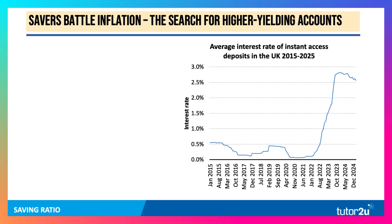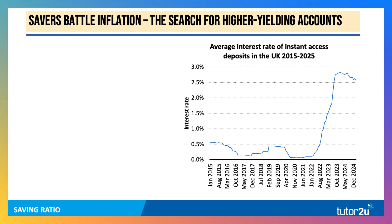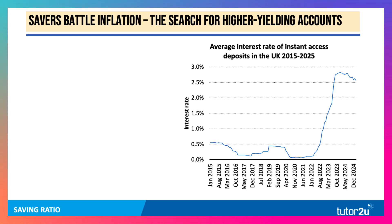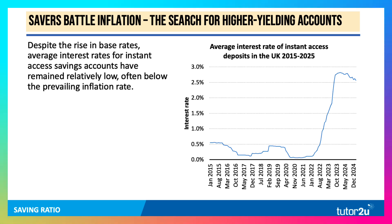Here's an interesting chart showing the average interest rate on instant access deposits — money you can access with a debit card or at cash points. For a large part of the last 10 years, interest rates were very low, below 1%. They have climbed to an average of just over 2.5%, but they've remained relatively low compared to inflation, which peaked at over 11% in the autumn of 2022.